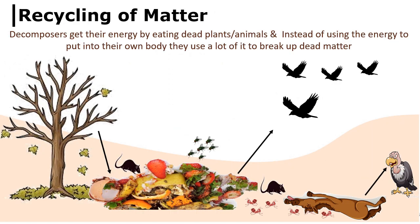Recycling of matter is the third function of the ecosystem. All living organisms are mortal. When they die, decomposers break them down and recycle the nutrients from the dead organic matter. There are two types: scavengers and decomposers. Scavengers like vulture, rat and crow consume dead organic matter, while decomposers such as fungi, earthworms and insects decompose the dead organic material.